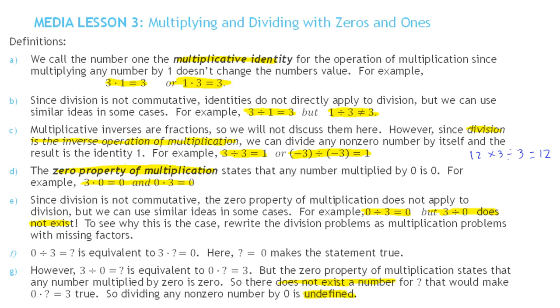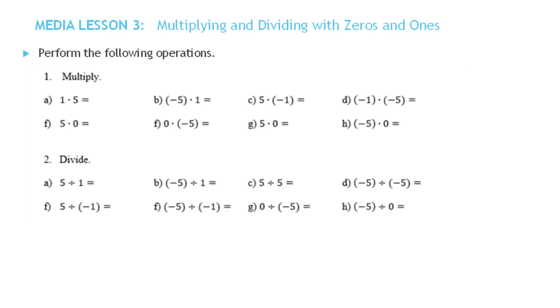Now let's look at some examples. We could have done these before without these facts, but we just want to think of them in terms of identities and inverses when possible. Any number times 1 is itself, so 1 times 5 is 5. Any number times 1 is itself, so this is negative 5.